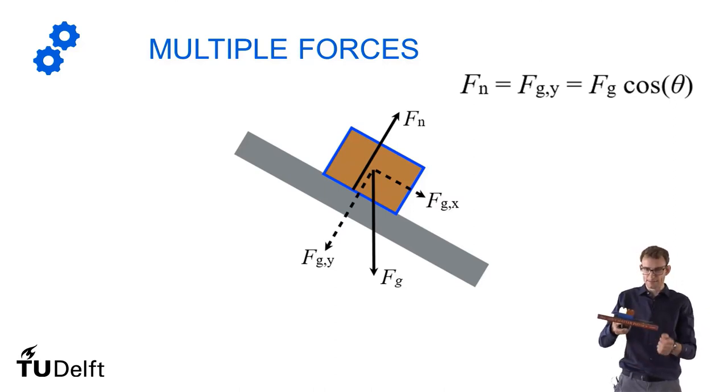Now, if I tilt the book a little bit, the block will still stay in place. So there must also be a force that compensates for the gravitational component along the surface of the book. And that, of course, is friction.